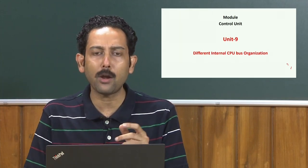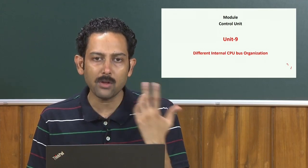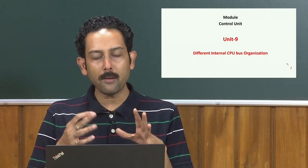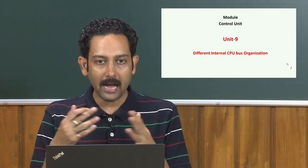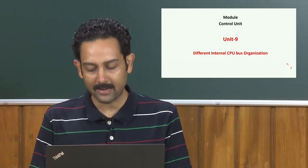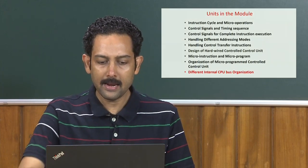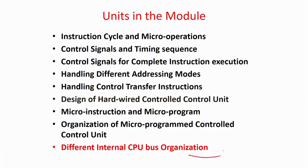In this unit we will have a broad overview of how things change with different internal bus organization compared to single bus architecture. We will not consider a two-bus architecture; rather we will go for a three-bus architecture, which gives a more elaborate feel of what advantages are available when multiple I/Os are possible together. Finally, we will give you an overview of three-bus architecture so that you can intuitively think about how other concepts will change in a multiple bus architecture.